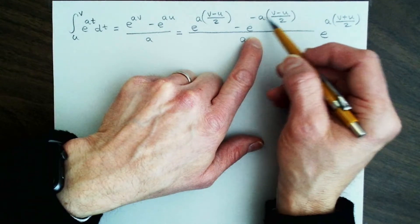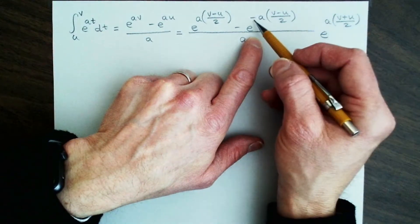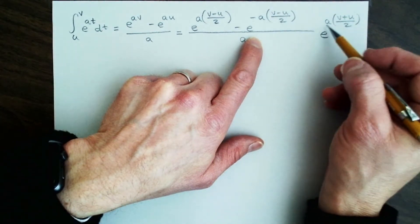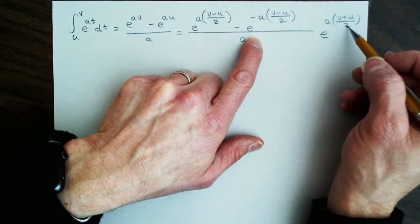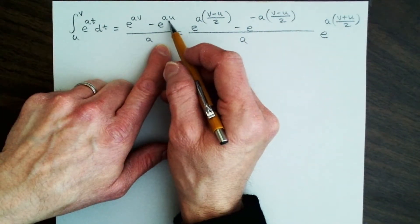And then on the second term, notice here I have negative v over 2, and then I have a plus v over 2, so those will cancel. And then I have two negatives, so I have negative a u over 2—I'm sorry, two negatives make a positive, I have positive a u over 2. And then I have a positive a u over 2. So when you combine those together, you just get back e to the au.